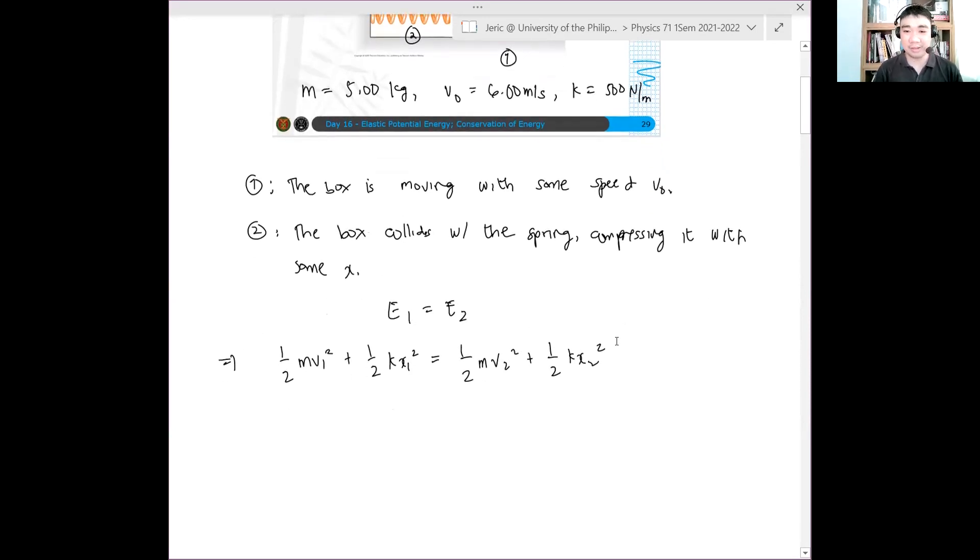Therefore, E1 equals E2, and we just get something like one-half mv1 squared plus one-half kx1 squared equals one-half mv2 squared plus one-half kx2 squared. What can we say about the initial elastic potential energy of the spring? Zero. Yes, zero. Because it hasn't interacted with the spring, therefore this should only be zero.